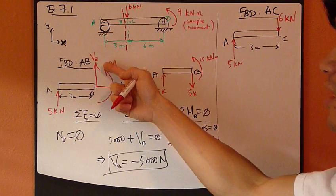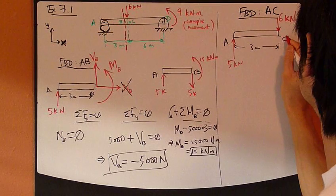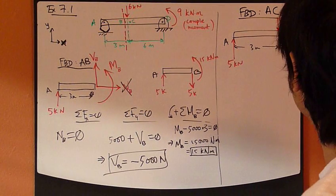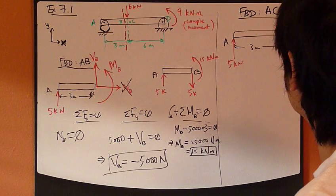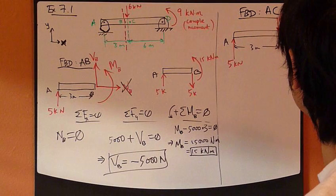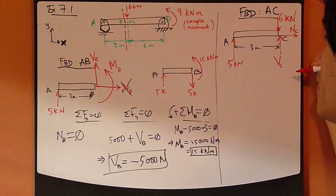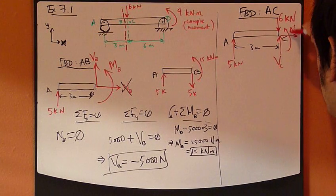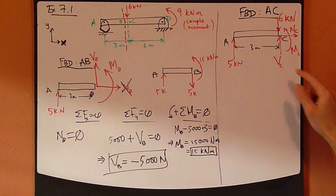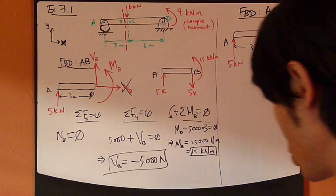And what else? You have these three unknown internal forces. I'm going to assume the same direction as the other section. This is my normal force at C, I have shear force at C, and then I have bending moment at C. Same deal, three unknown, three equations, shouldn't be a problem.